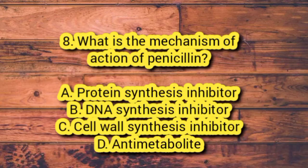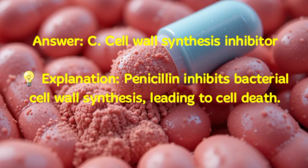Number 8. What is the mechanism of action of penicillin? A. Protein synthesis inhibitor. B. DNA synthesis inhibitor. C. Cell wall synthesis inhibitor. D. Antimetabolite. Answer: C. Cell wall synthesis inhibitor. Explanation: Penicillin inhibits bacterial cell wall synthesis, leading to cell death.